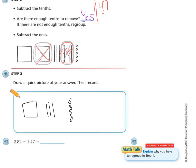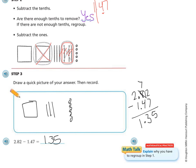Just to do a quick check: two and eighty-two hundredths minus one and forty-seven hundredths with decimals lined up. We regroup, which we did. Twelve minus seven is five, seven minus four is three tenths. So that is what we ended up with. This picture is just a representation of what you're doing with the numbers.